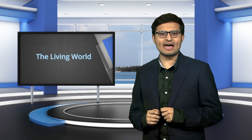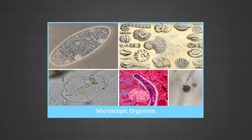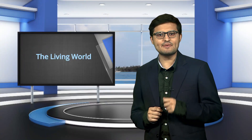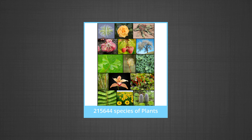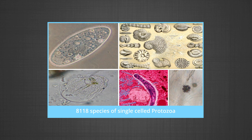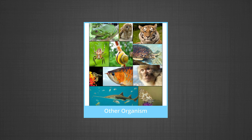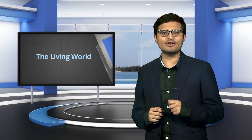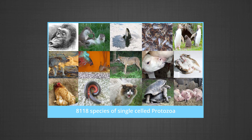One of the most important things about living organisms is that they are found in almost unbelievable numbers of varieties — from microscopic organisms to the most gigantic organisms like elephants and the blue whale, and from organisms with the shortest lifespan like the mayfly to those with the longest. Biologists have recorded about 9,53,434 species of animals, 2,15,644 species of plants, 43,271 species of moulds and fungi, 8,118 species of single-cell protozoans, and 13,033 species of chromists including brown algae, diatoms and water moulds. However, there are many more millions yet to be described.